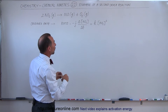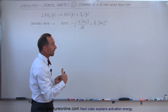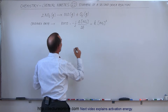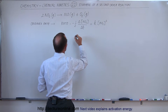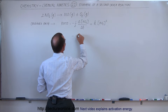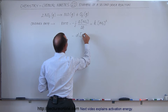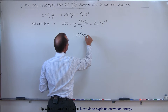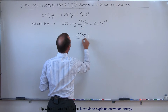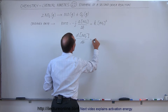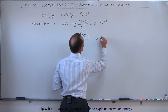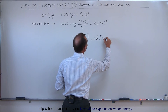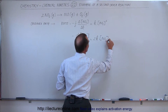Let's solve this equation by putting it into differential form. We move the two to the other side, so we can write this as: minus the change in the concentration of nitrogen dioxide as a function of time is equal to two times the rate constant times the concentration of nitrogen dioxide squared.